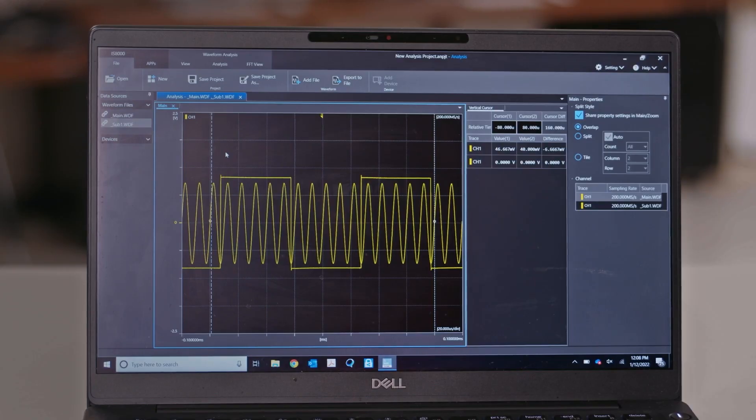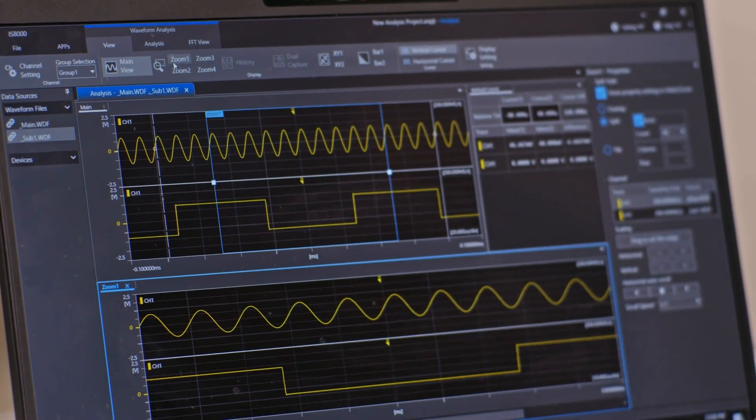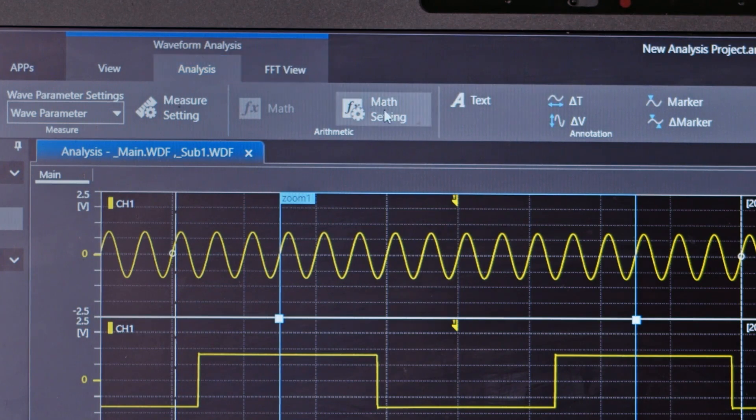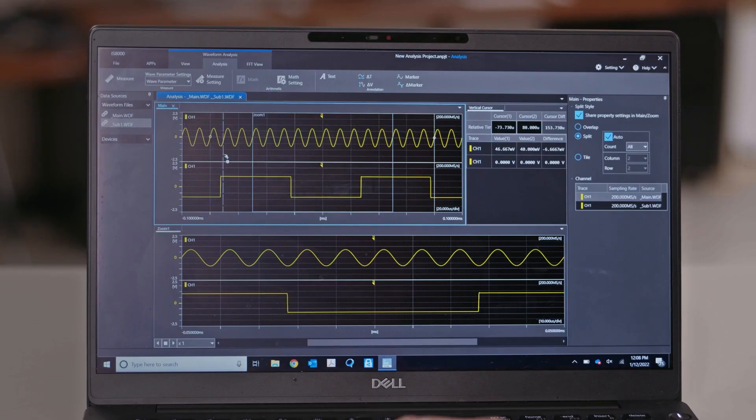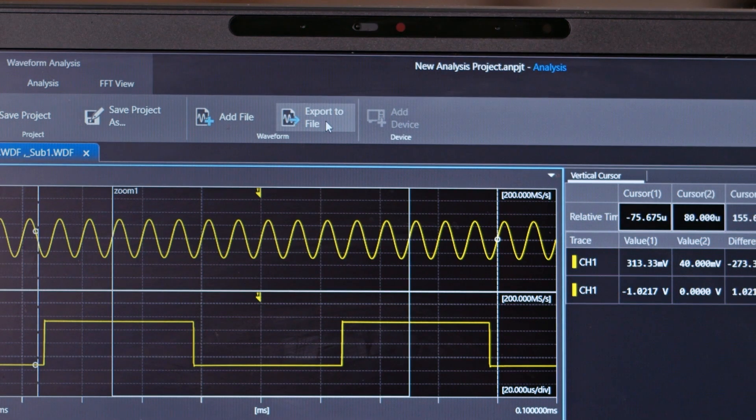Now that the files are open, IS-8000 can be used to zoom on waveforms, create math channels, view cursor measurements, output data to CSV, and much more for data analysis.